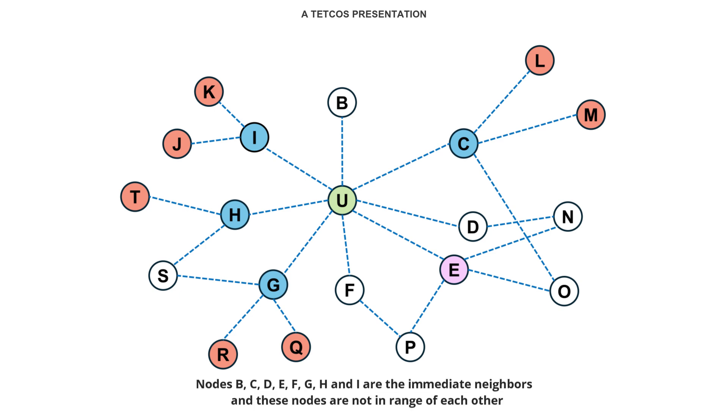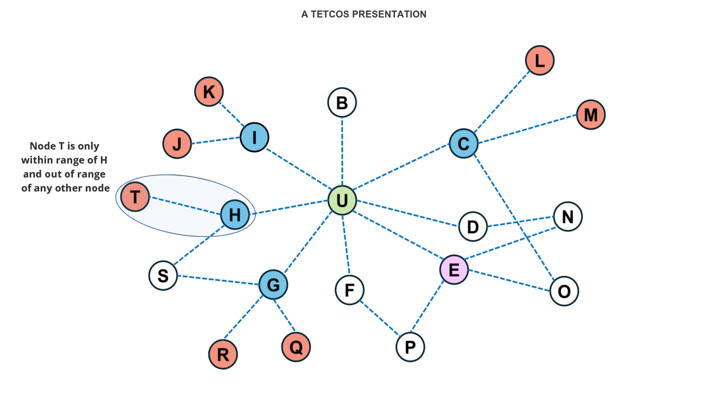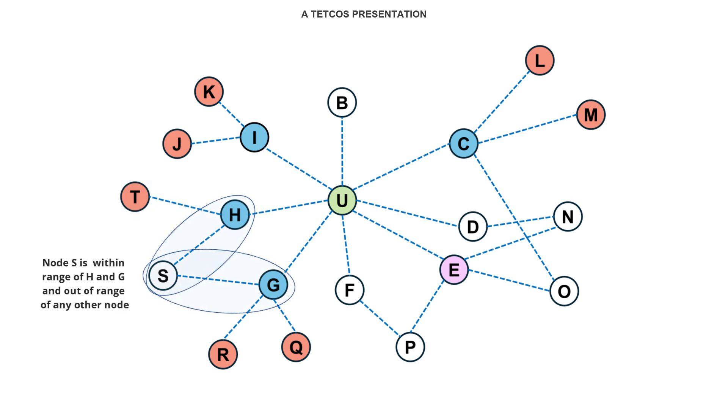Nodes J and K are immediate neighbors of node I, but are not within range of each other or any other node. Node T is only within range of node H, making it an immediate neighbor of node H, but it is out of range of any other node. Node S is within range of nodes H and G, making it an immediate neighbor of both, but it is out of range of all other nodes. And so on. The connectivity can be seen from the blue dashed line.